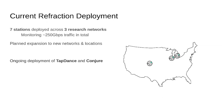This will likely see a significant expansion to new networks and new locations in the future, and we are always looking for new partners and new internet service providers. This is our ongoing deployment of the TapDance and Conjure protocols. Conjure is an updated version of TapDance that is easier to run, more difficult to block, more modular, and gives us more flexibility in how we distribute client software.